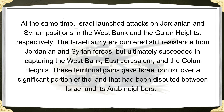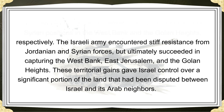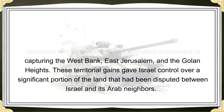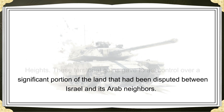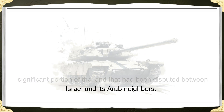At the same time, Israel launched attacks on Jordanian and Syrian positions in the West Bank and the Golan Heights, respectively. The Israeli army encountered stiff resistance from Jordanian and Syrian forces, but ultimately succeeded in capturing the West Bank, East Jerusalem, and the Golan Heights. These territorial gains gave Israel control over a significant portion of the land that had been disputed between Israel and its Arab neighbors.